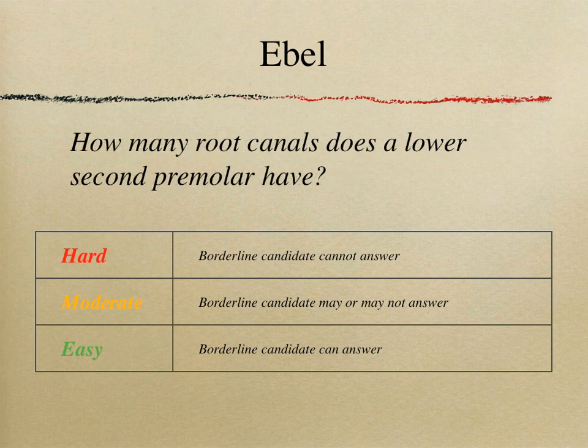'How many root canals does a lower second premolar have?' — for a first-year dental student this might be moderate or hard if they haven't been exposed to it yet; for a third-year student it becomes easier or moderate; and for a fifth-year student it is probably an easy item.